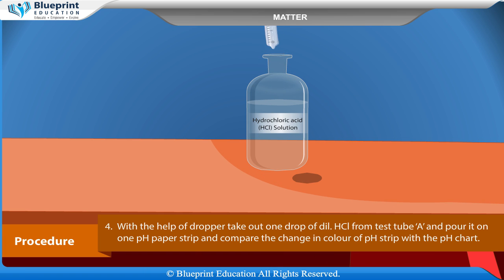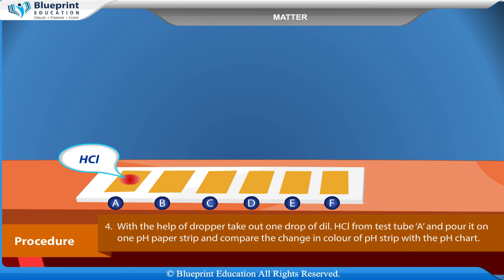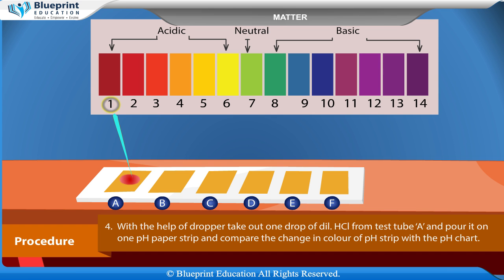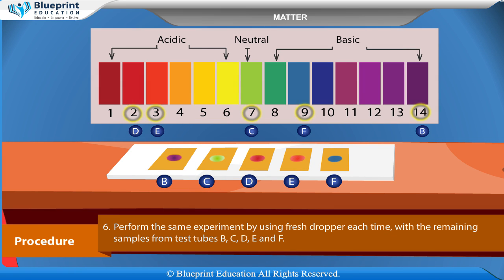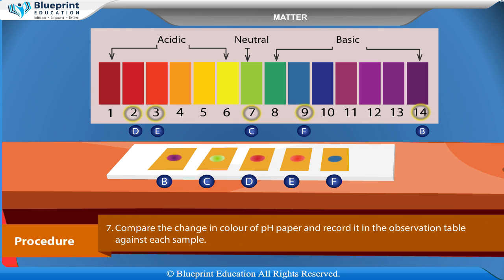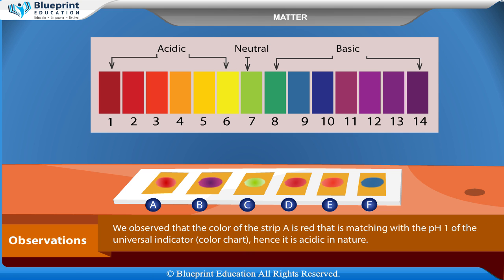With the help of a dropper, take out one drop of dilute HCl from test tube A and pour it on one pH paper strip. Compare the change in color of the pH strip with the pH chart and record the pH value and change in color in the observation table against sample A. Perform the same experiment using a fresh dropper each time with the remaining samples from test tubes B, C, D, E, and F, and record the observations in the table against each sample.